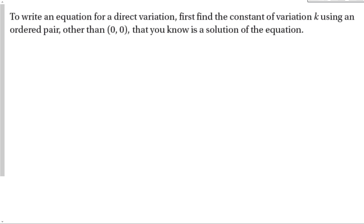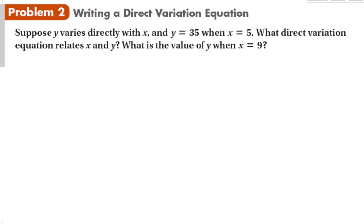To write an equation for direct variation, first find the constant of variation k using an ordered pair other than (0, 0), because (0, 0) doesn't give us any information, that we know is a solution to the equation. Suppose y varies directly with x, and y equals 35 when x equals 5. What direct variation equation relates y to x? And what is the value of y when x is 9?